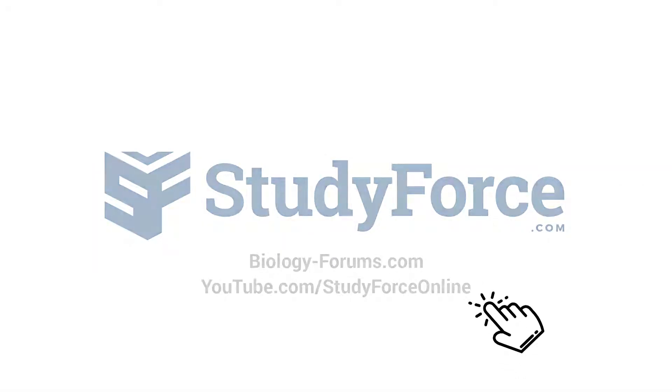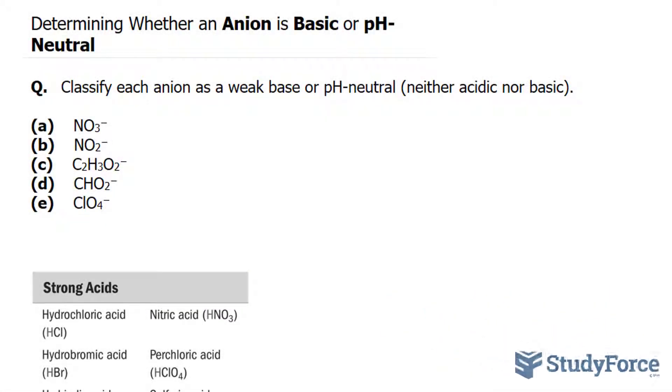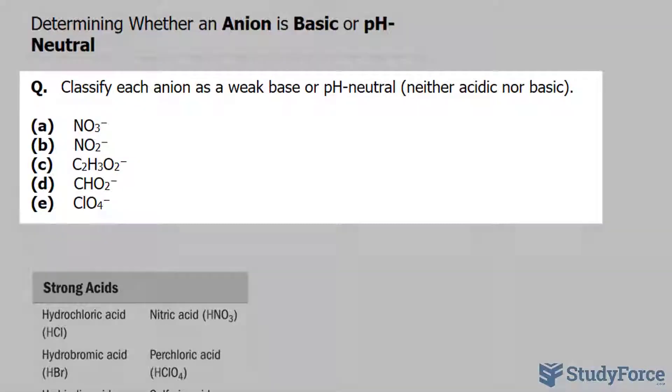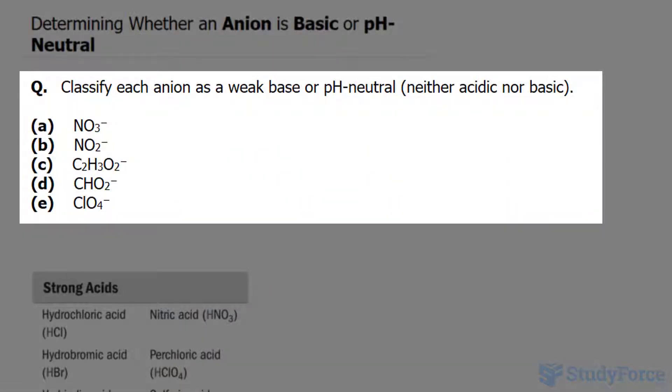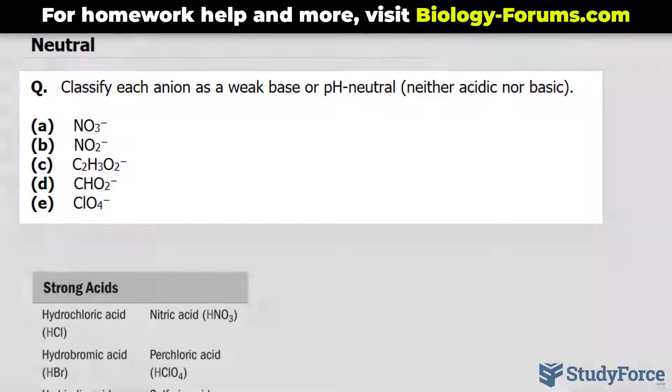In this lesson, we'll go through several examples discussing whether an anion is basic or pH neutral. The question reads: classify each anion as a weak base or pH neutral. So we have one of two options, whether it's a weak base or pH neutral, meaning that it is neither acidic nor basic.